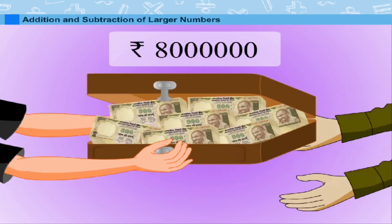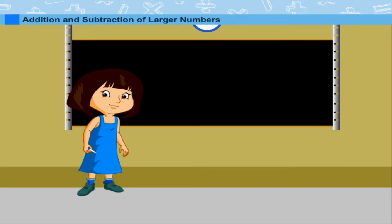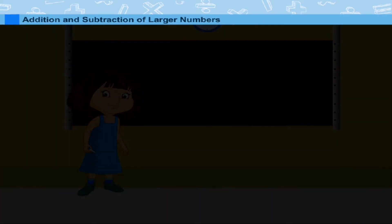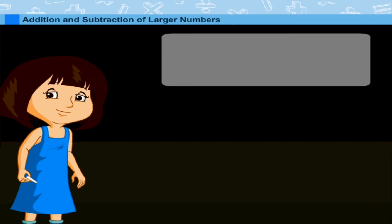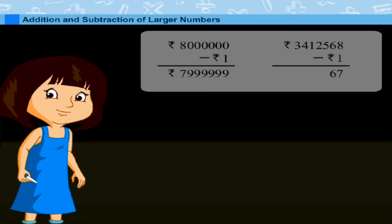Now Uncle Raj gave 80 lakhs rupees to his son Deepak. Out of this, Deepak spent 34 lakhs 12,568 rupees. Let us find out how much is left with him. We subtract 34 lakhs 12,568 rupees from 80 lakhs rupees.